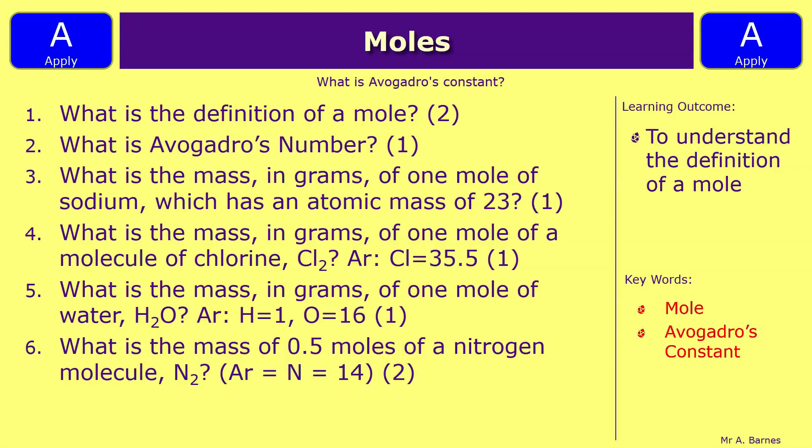Question four is what is the mass in grams of one mole of a molecule of chlorine Cl2, and the atomic mass for chlorine is 35.5. Question five is what is the mass in grams of one mole of water H2O, where the atomic mass is 1 for hydrogen and 16 for oxygen.